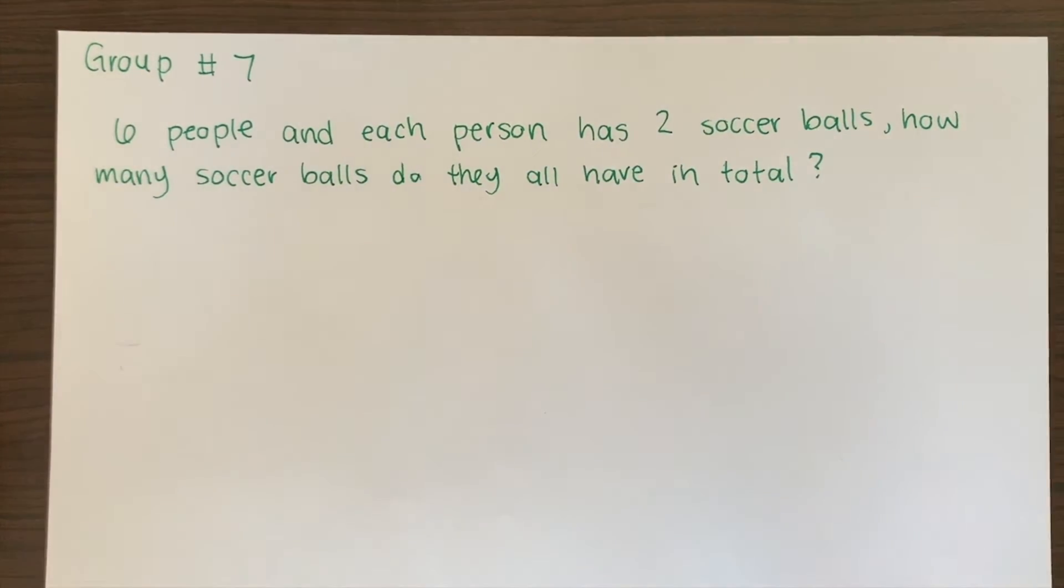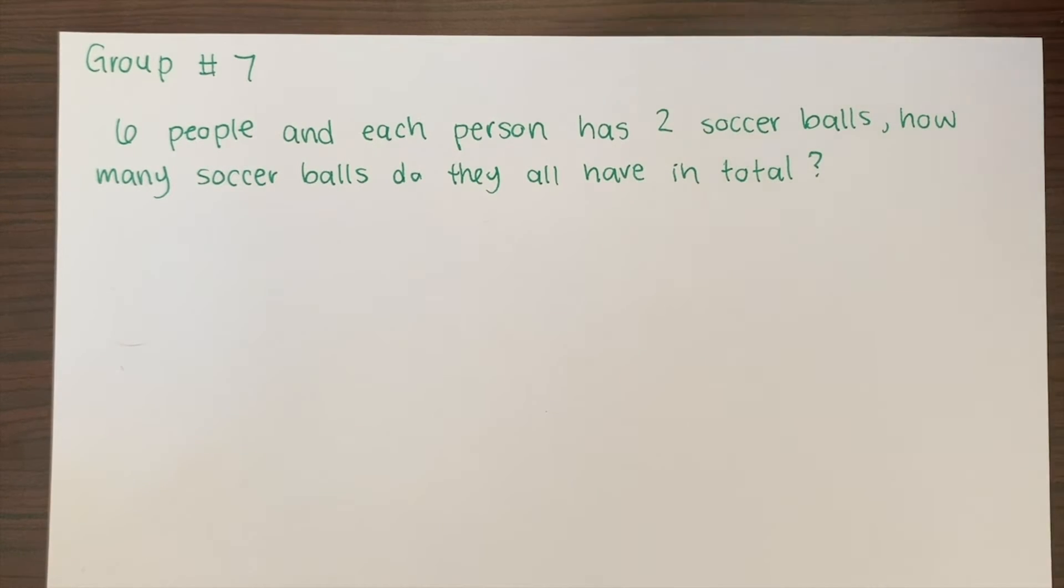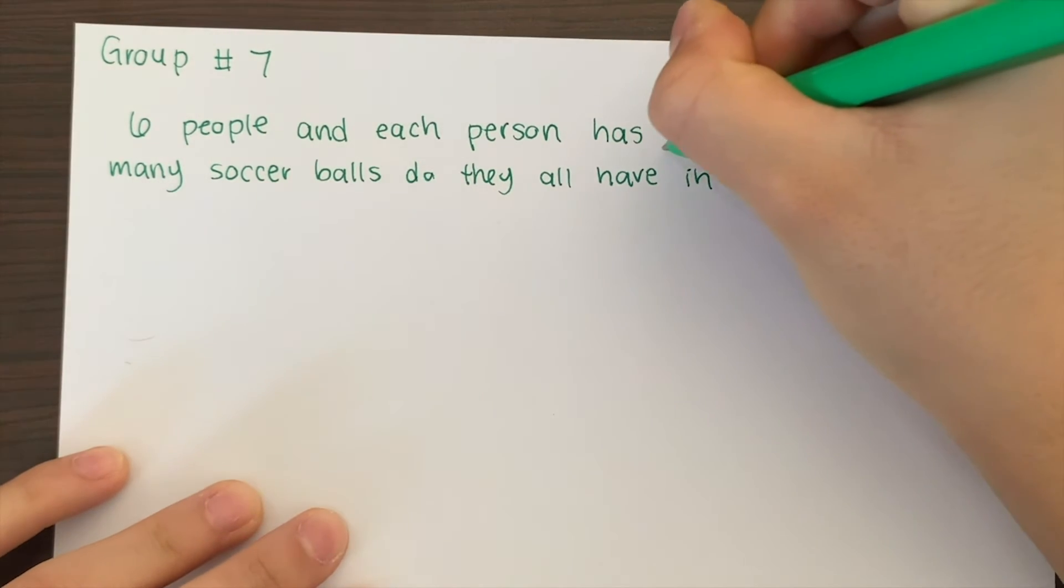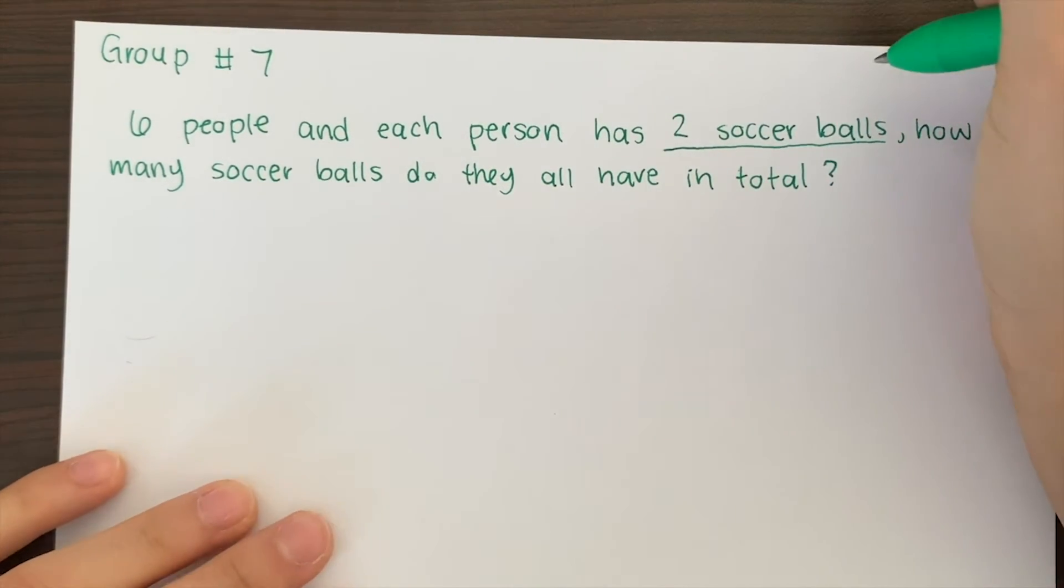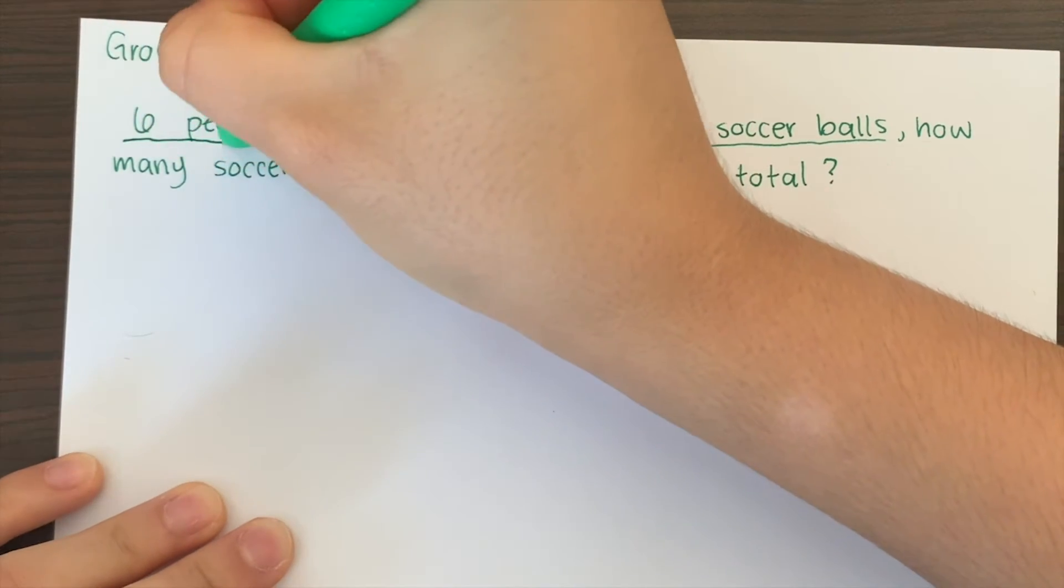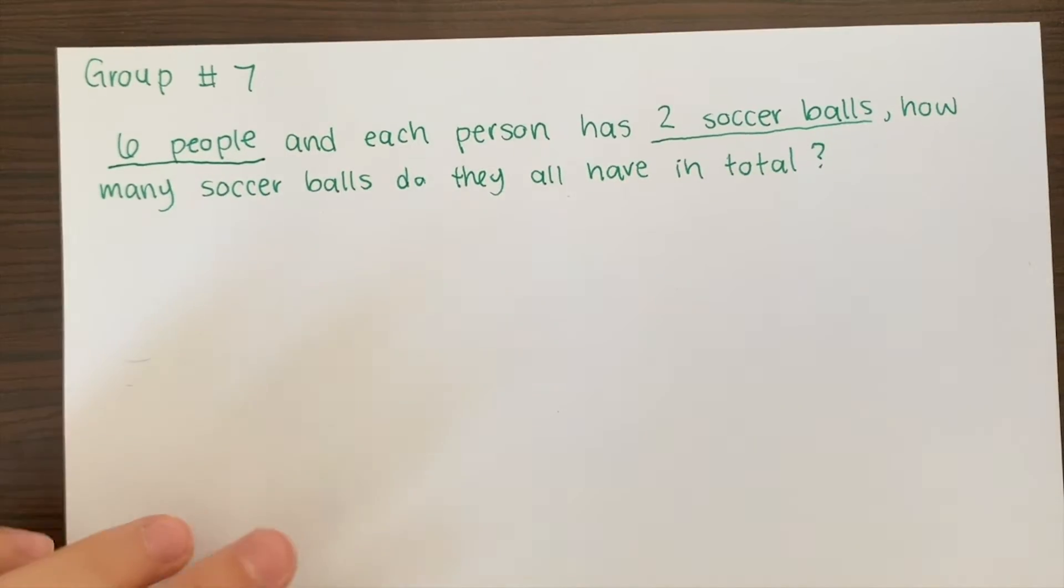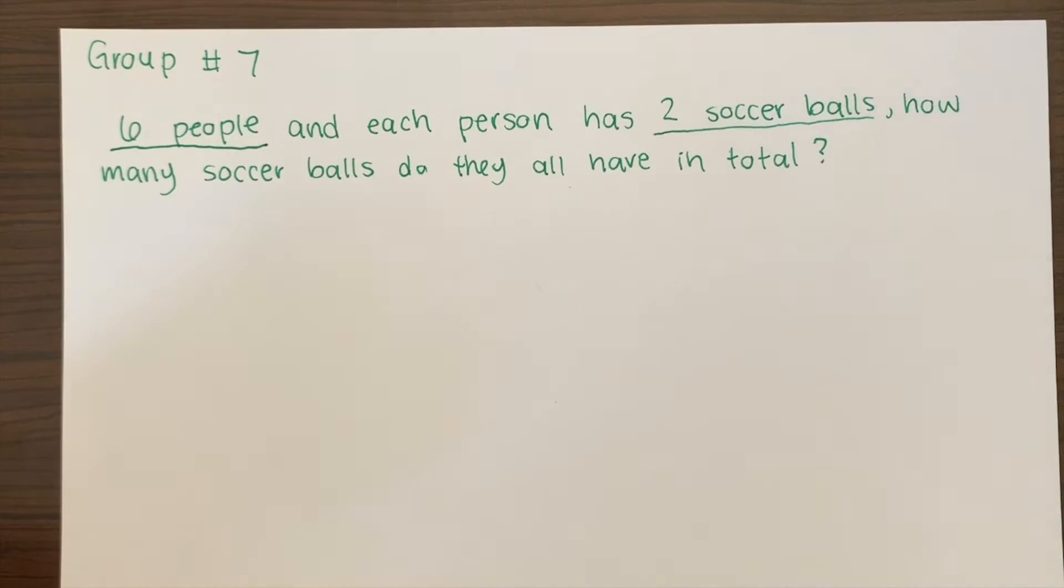Now in this group, which is group number seven, it says six people and each person has two soccer balls. How many soccer balls do they all have in total? I'm going to go through and underline the important parts. So two soccer balls, that's important, and how many people we have, that's also important. Now we have to put an equation together. We have to use multiplication.